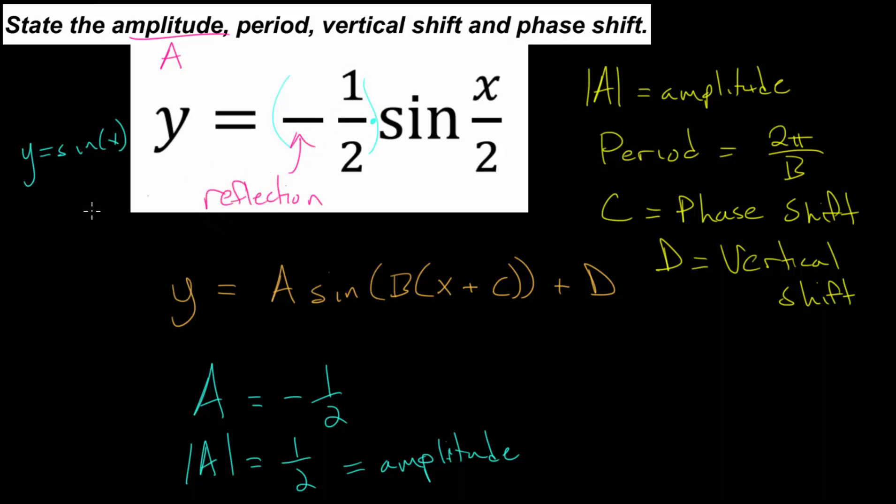So it doesn't affect the amplitude, but it will reflect this function. The sine function generally looks like that. It goes through the origin. If it has this negative sign, that will reflect everything across the x-axis. But notice it won't affect the amplitude. The amplitude will still be the same. So that's why we look at the absolute value of this coefficient a.